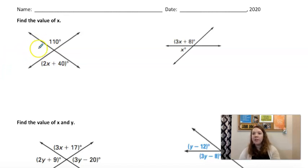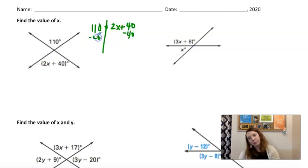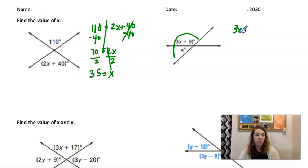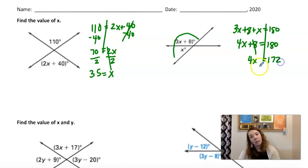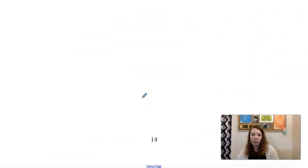All right. Last page. Find the value of x. We know these have to be equal. And now we can solve. So minus 40. And divide by 2. So 35. And these have to add to be 180 since they're a linear pair. So you have 4x plus 8 equals 180. Minus 8 would give us 172. And divide by 4. Is 43. Yep, 43.